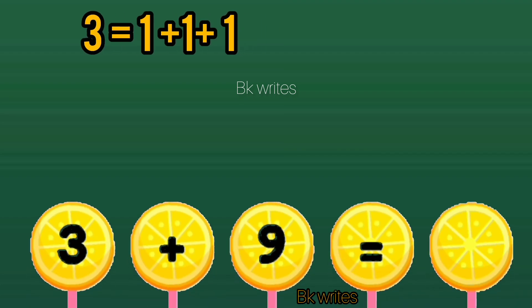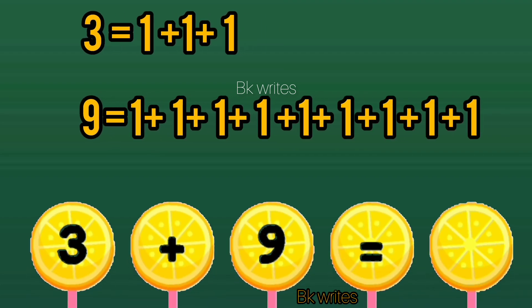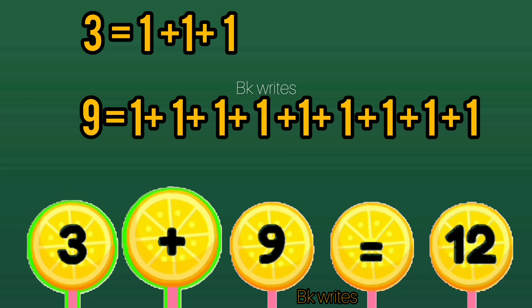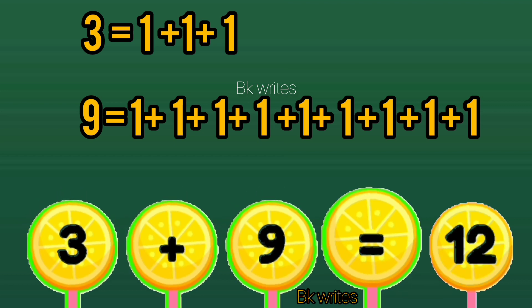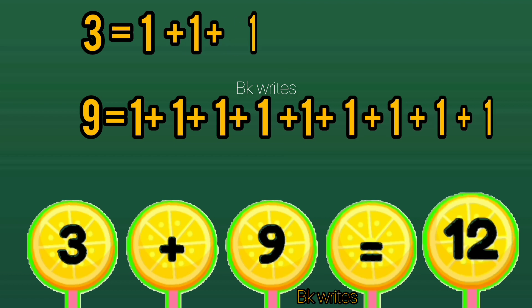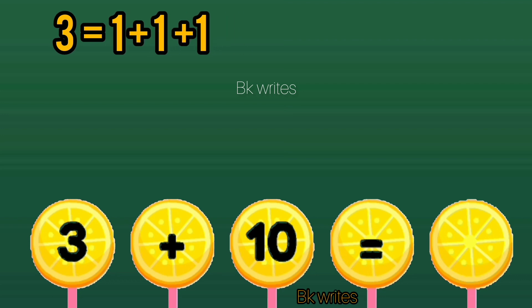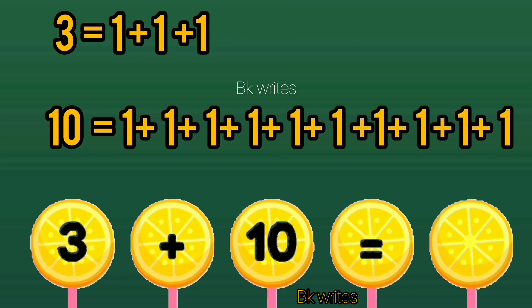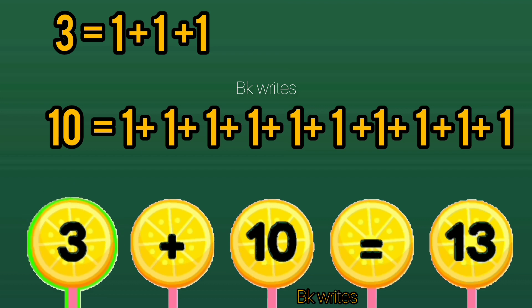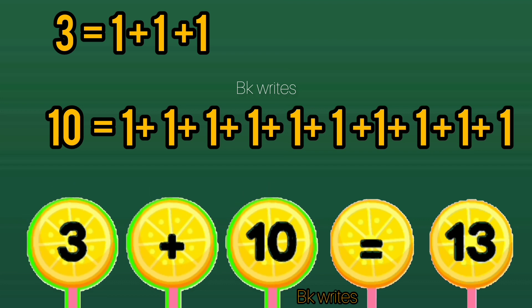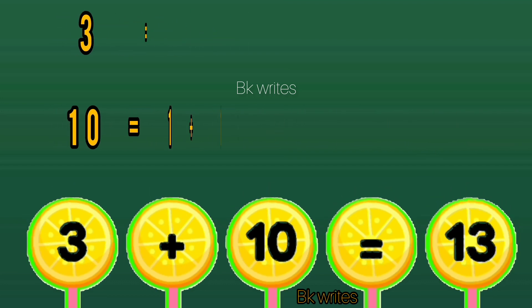3 plus 9 is equal to 11. 3 plus 9 is equal to 12. 3 plus 9 is equal to 12. 3 plus 10 is — 3 plus 9 is equal to 12. 3 plus 9 is equal to 13.